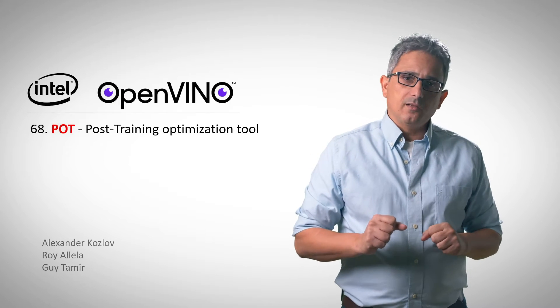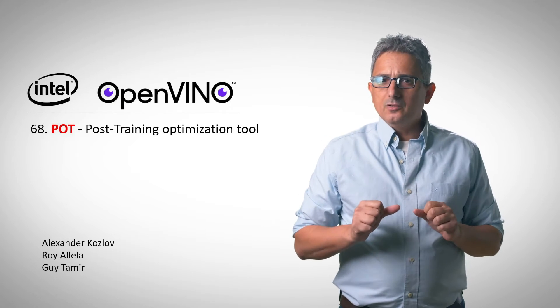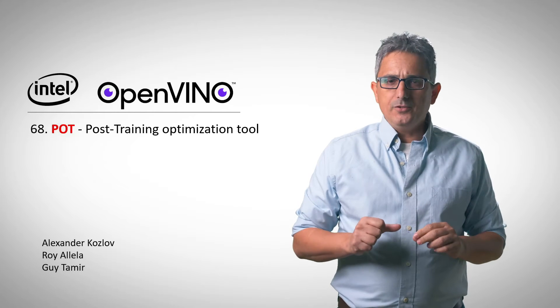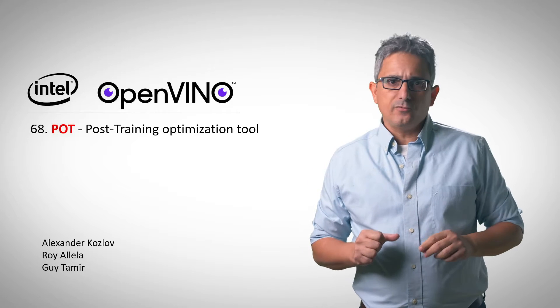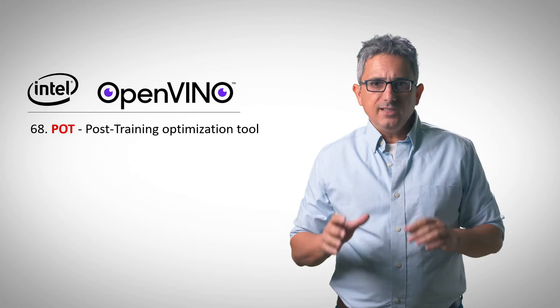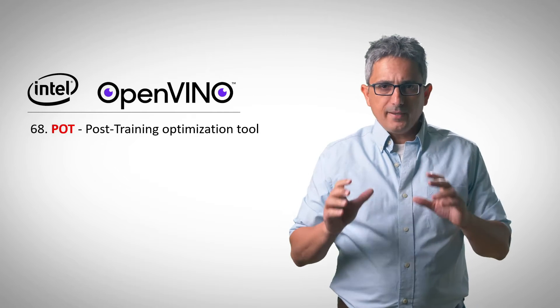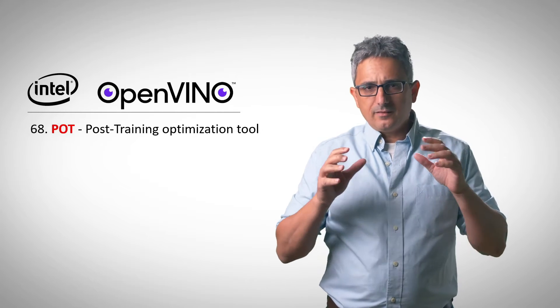Welcome back to the OpenVINO channel! Calibrating models to integer is probably the fastest way for you to accelerate the performance of your models. You can go and retrain your models with a more compact data format, but I guess that this is faster.